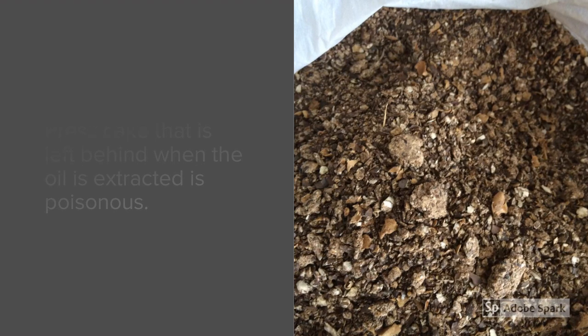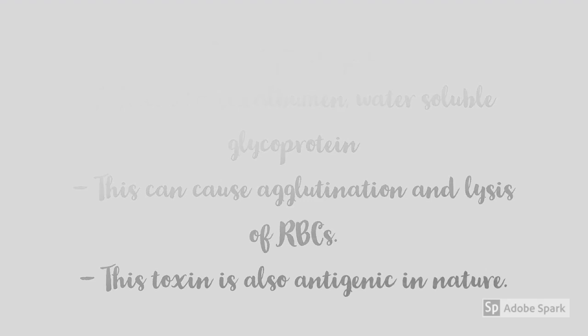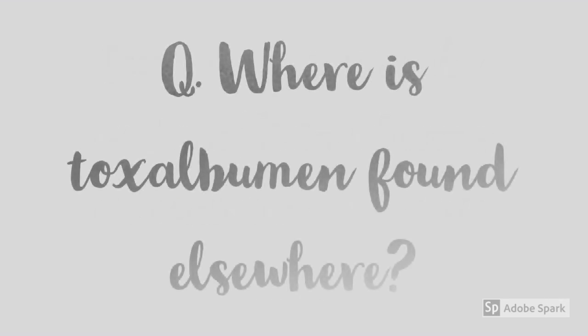What makes the seeds of Ricinus communis poisonous is ricin — a toxalbumin, or water-soluble glycoprotein, that has agglutination properties and is also antigenic in nature. The seeds and press cake contain ricin, whereas the oil contains ricinoleic acid, which explains why the seeds and press cake are poisonous whereas the oil extracted from those seeds is non-poisonous.